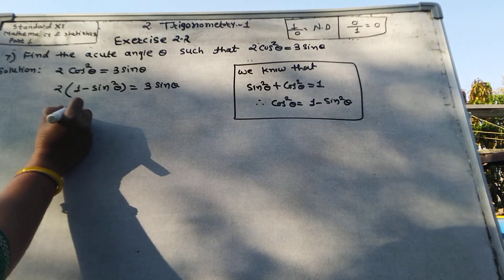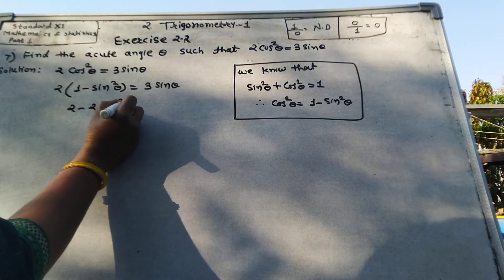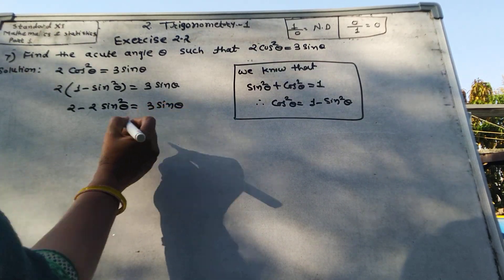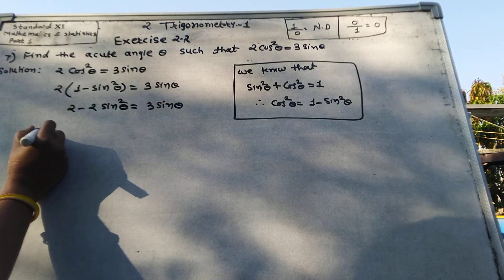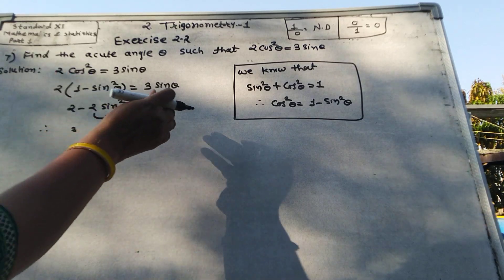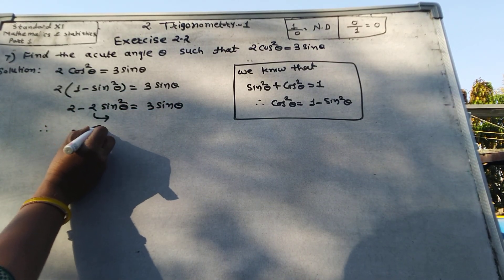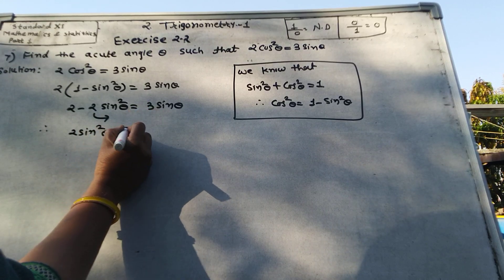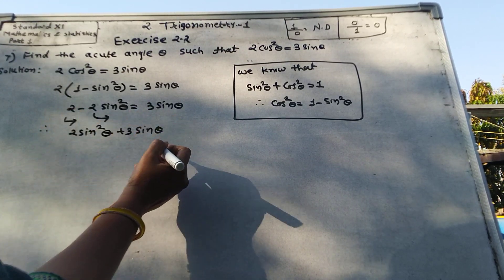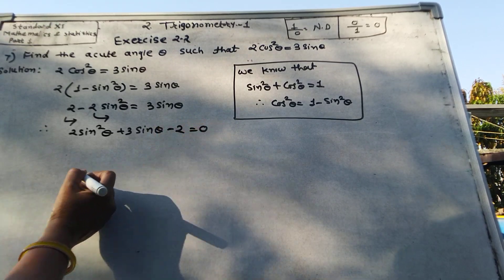Expanding: 2 times 1 gives 2, and 2 times sin squared theta gives 2 sin squared theta. So 2 minus 2 sin squared theta equals 3 sin theta. Taking the 3 sin theta to the right side and rearranging: 2 sin squared theta plus 3 sin theta minus 2 equals 0.